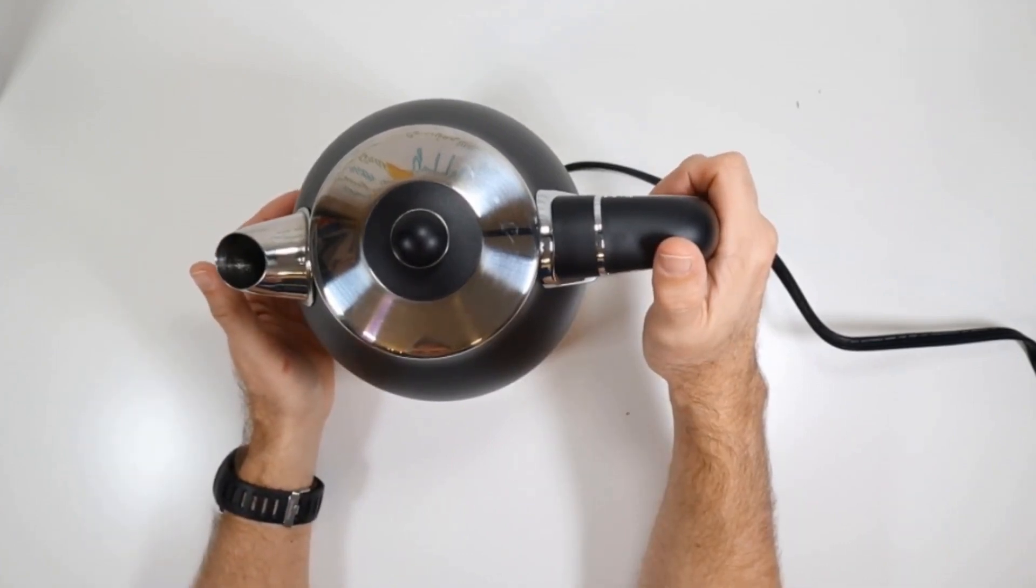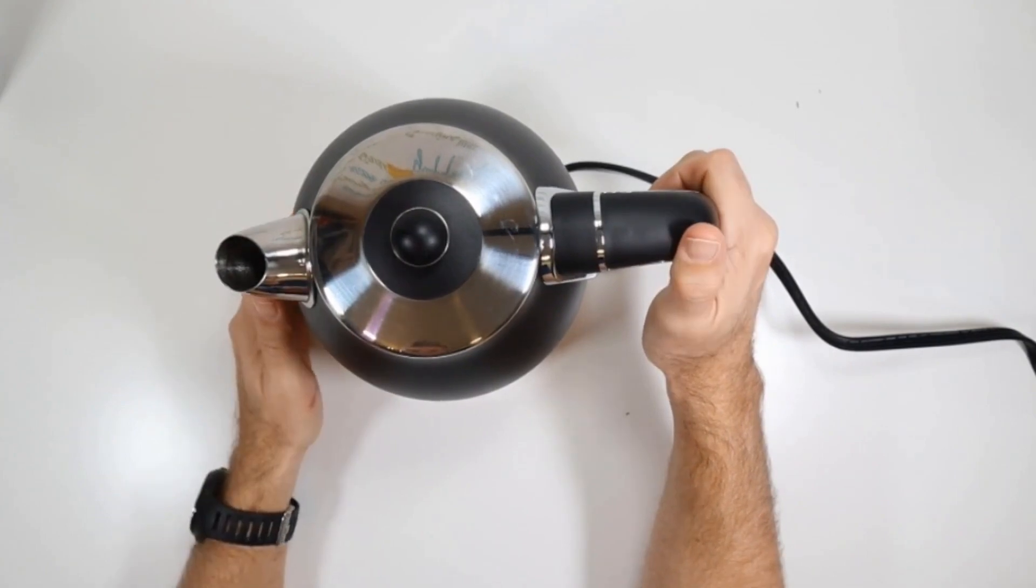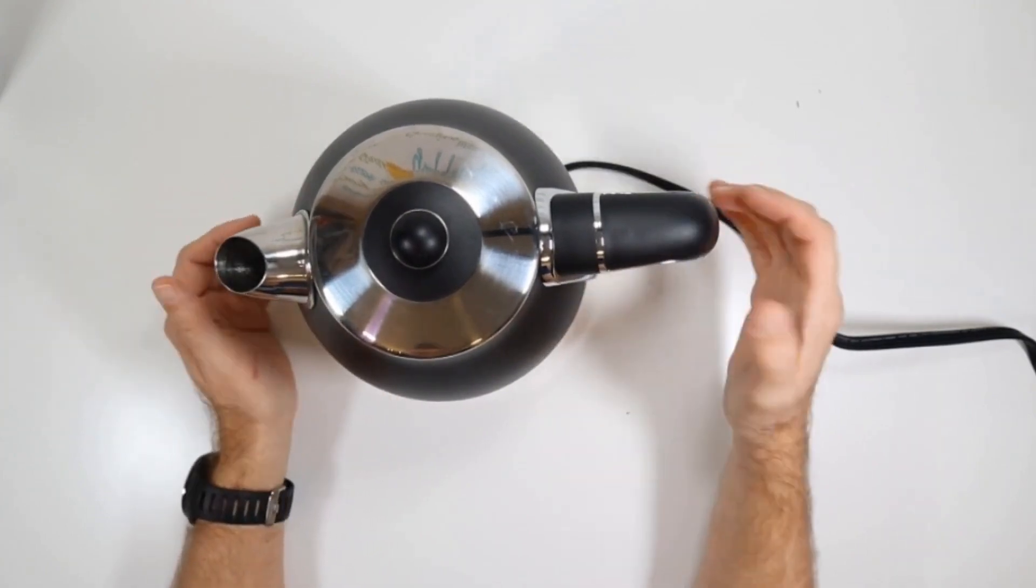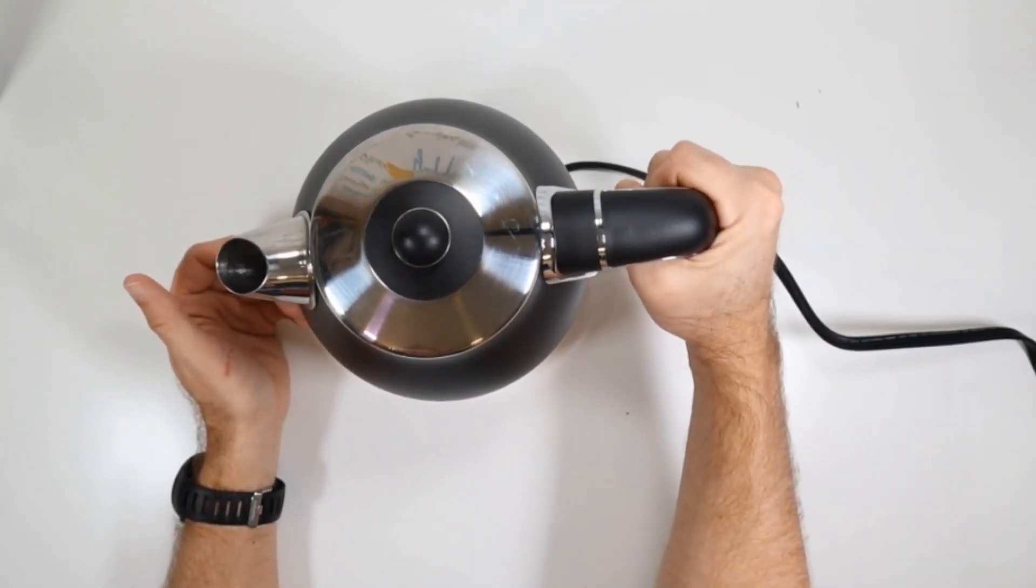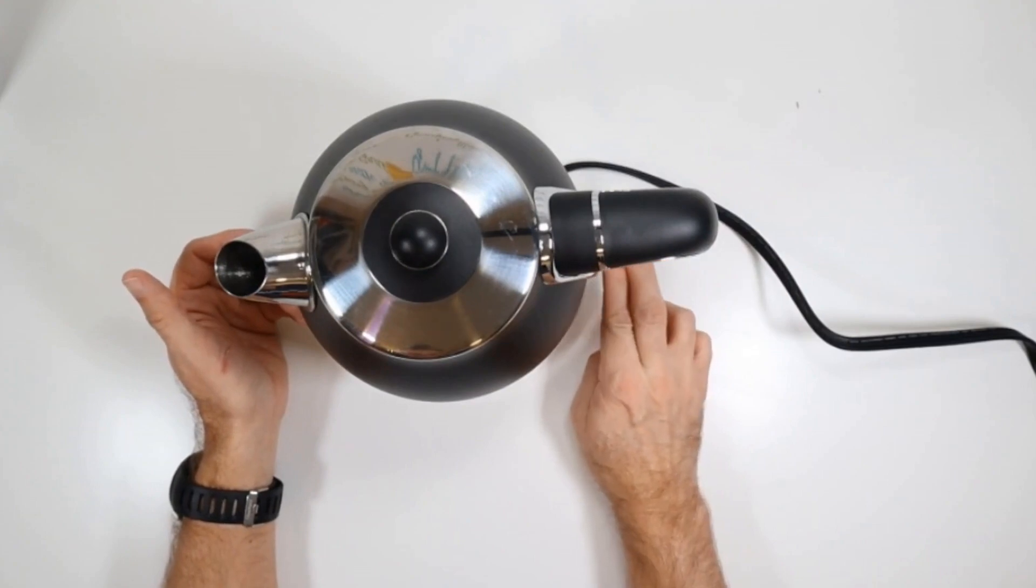So do I recommend the Oventi electric tea kettle for seniors and the elderly? A few things that are good about it for older adults. It's got a nice, big, easy-to-grasp handle. The button is easy to activate. It's flat, easy to find. It lights up when it's running, turns off when it's not.